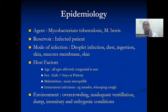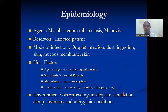Coming to the epidemiology: the agent is Mycobacterium tuberculosis and Mycobacterium bovis. The reservoir is the infected patient. Mode of infection is either droplet infection — when inhaled, that becomes pulmonary tuberculosis — or dust. Ingestion, for example through contaminated or unpasteurized milk. Then direct entry through inflamed or abraded skin and mucous membranes.